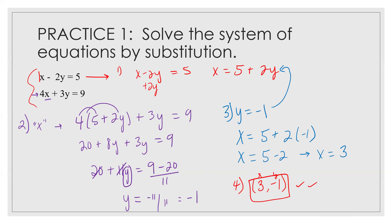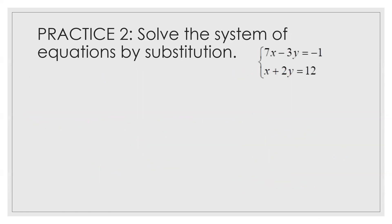Now it's your turn. You have 7x minus 3y equals negative 1 and x plus 2y equals 12. Work independently and then check with your group, or work as a group to find the values of x and y. Ready, set, go be great.